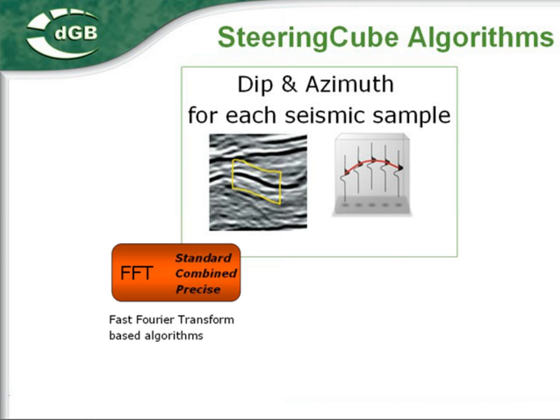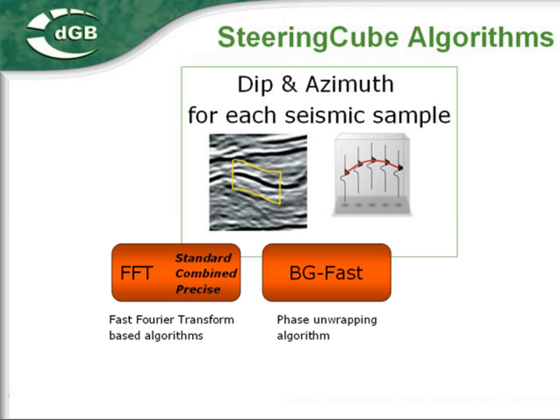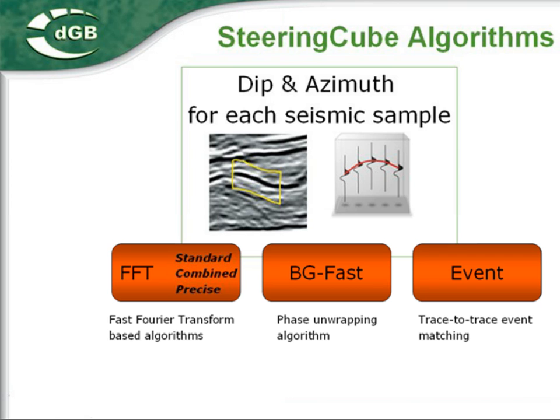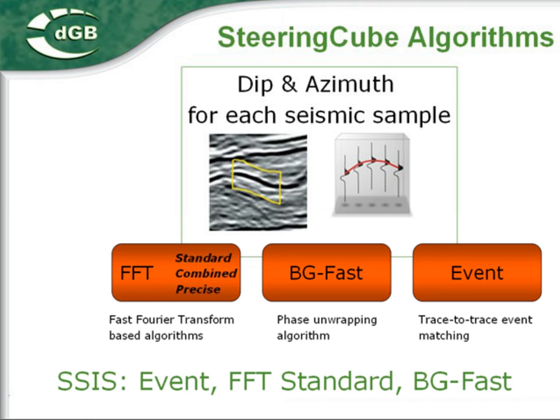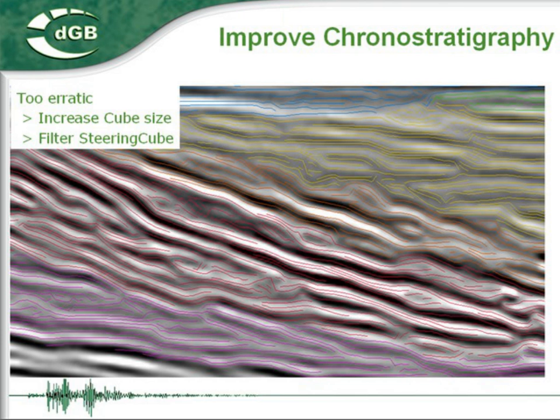There are three algorithms based on Fourier transforms. The BG-FAST algorithm calculates the gradient of the seismic phase. Event Steering is a new algorithm released in version 3.2; this algorithm computes the dip-azimuth from tracked seismic maxima, minima, and zero crossings. For grounor stratigraphy, the recommended order is Event Steering followed by FFT Standard and BG-FAST.